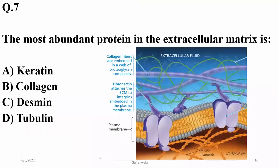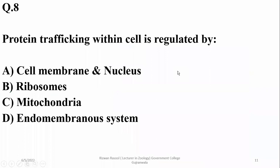Question 7: The most abundant protein in the extracellular matrix is collagen. In human beings alone, collagen makes up 35 percent of body weight. Right option is collagen. Question 8: Protein trafficking within a cell is regulated by the endomembrane system, whose main functions include protein synthesis and secretory trafficking.